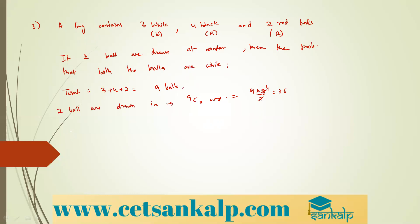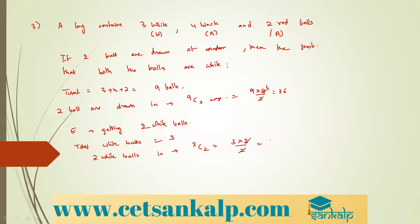Event E is getting 2 white balls. There are 3 white balls total, so 2 white balls can be drawn in 3C2 = 3 ways. The required probability is 3/36 = 1/12.